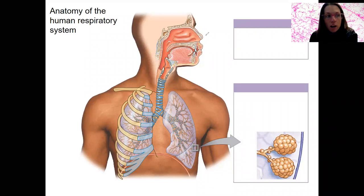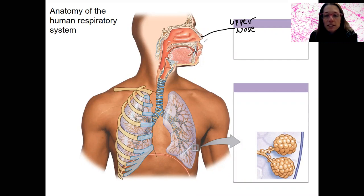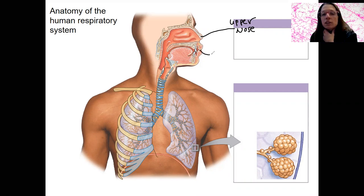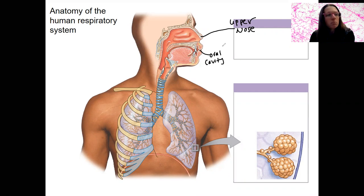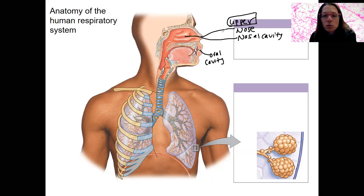Let's walk through this anatomy, starting with the upper respiratory system and then the lower. Here's our upper, and we've got things like the nose. This is the first place that air passes in. Air can pass through your oral cavity as well, which is here — not technically part of the respiratory system, but you can get air in through there as well. So upper respiratory up here: nose, this is the nasal cavity. Air is going to pass through here. We'll talk briefly about these structures here.